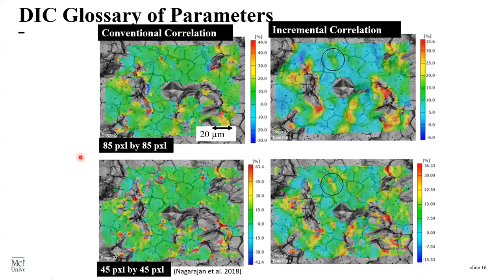A publication compared the two correlation methods and found that using incremental correlation allows you to fill in spots that were not possible with the conventional method. Additionally, by decreasing the facet size, spots where decorrelation occurs can actually reveal local strain effects.